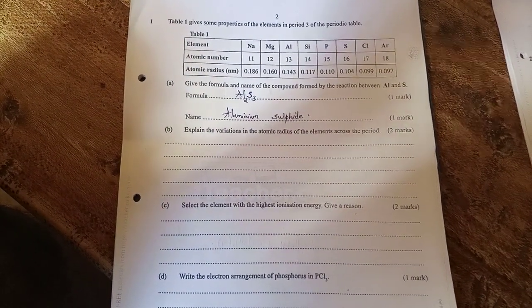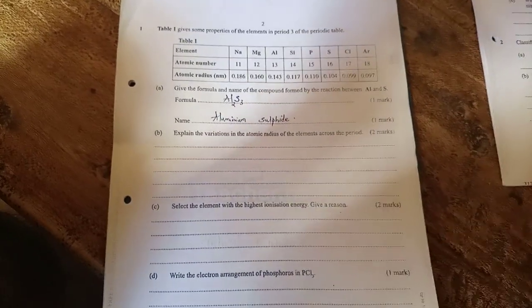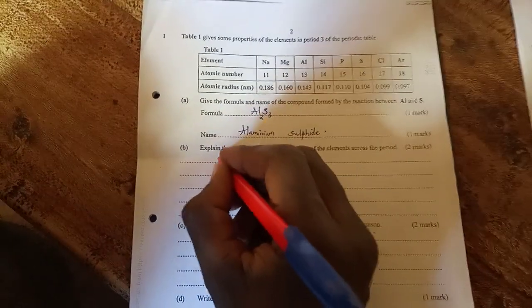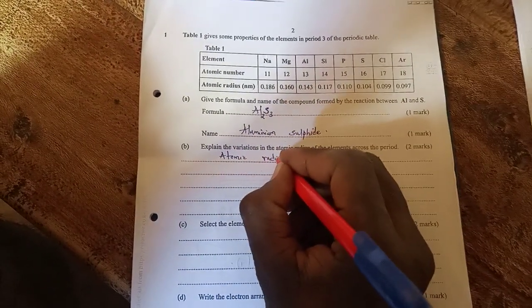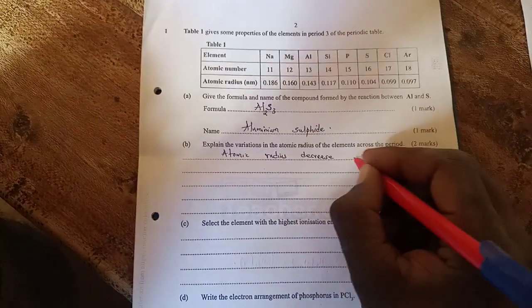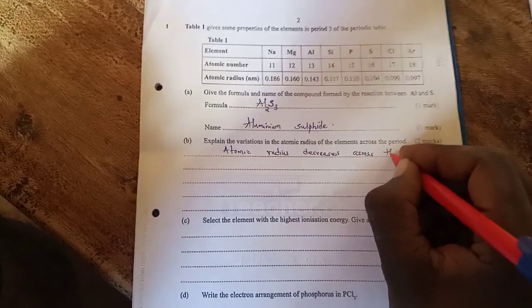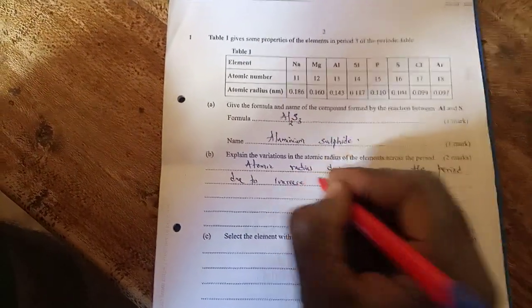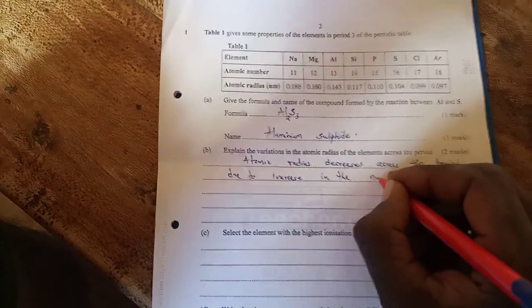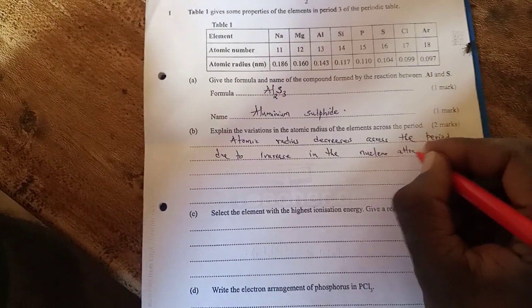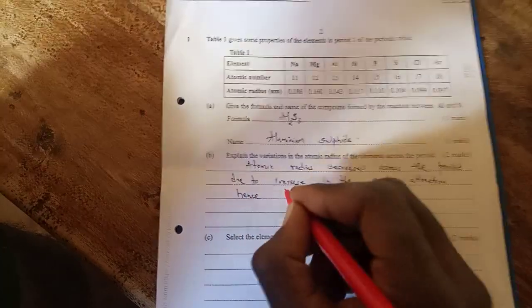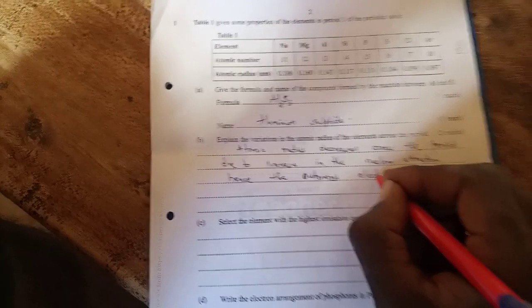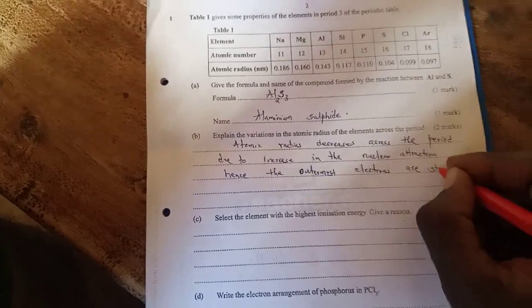Explain the variation in atomic radius of the elements across the period. In form 2, that is a trend across period 3, where it is studied that the atomic radius decreases across the period due to increase in the nuclear attraction. Hence, the outermost electrons are strongly attracted.